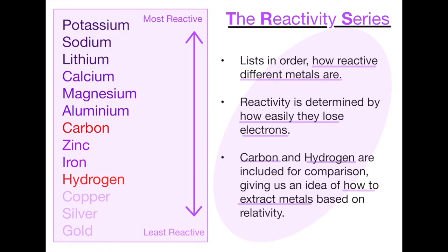Next we have the reactivity series. This is something you are given in the exams, however I would also recommend remembering a good chunk of it. A lot of the top elements are group one elements, typically known as being very reactive. As you go down the list you get copper, silver and gold — the transition metals. The reactivity series lists in order how reactive different metals are, determined by how easily they lose electrons. Potassium, sodium and lithium are all in group one and will lose that one electron very easily.